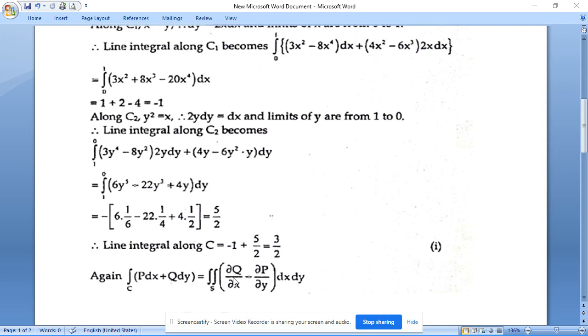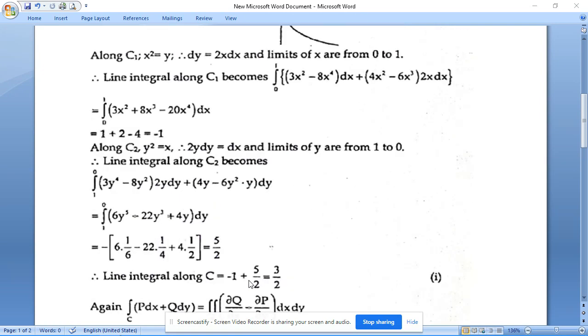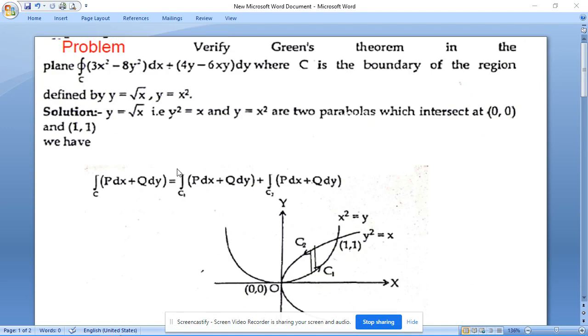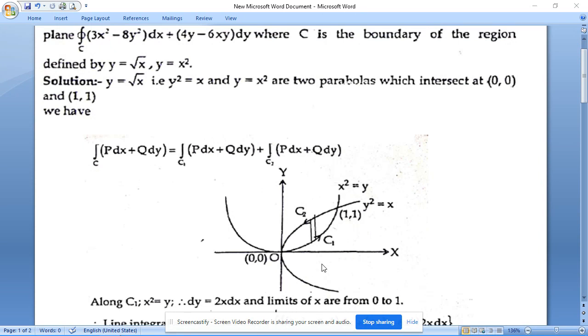Now we have to compute the right-hand side of Green's theorem. To compute this, we need the two partial derivatives, which are obtained by differentiating partially with respect to x and with respect to y. Where P and Q are obtained by just comparing with the integral Pdx + Qdy. Now to take the limits, we draw a strip parallel to the y-axis in this closed region.